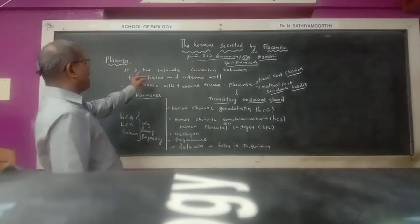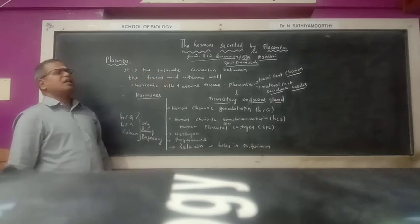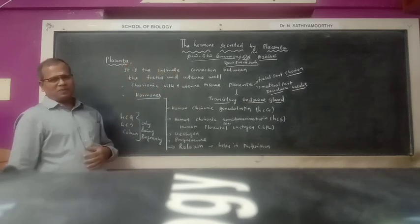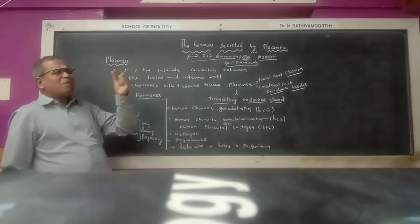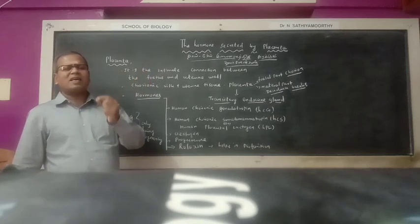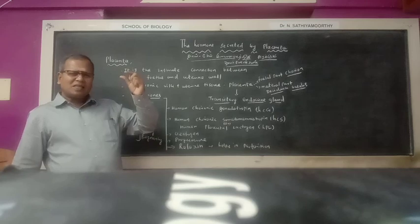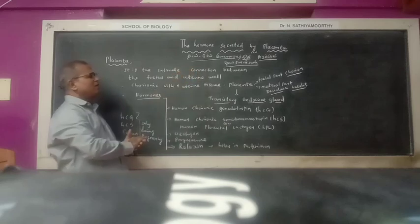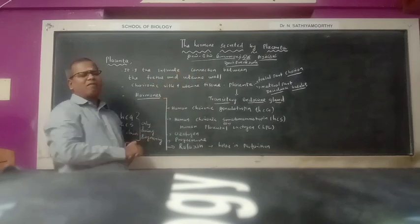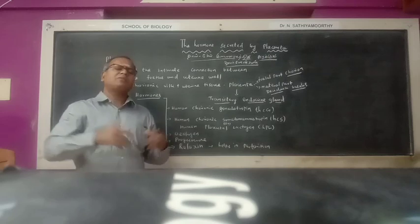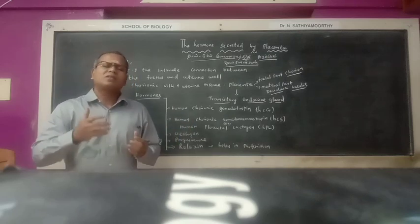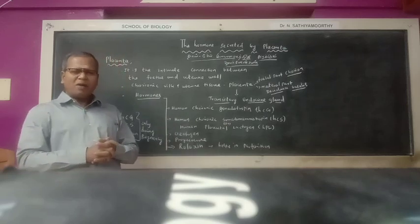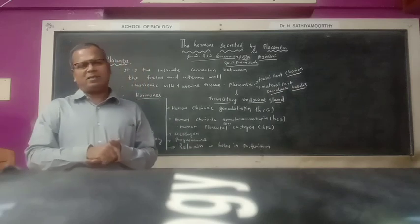Placenta is an intimate connection between the fetus and the uterus. The uterus is made up of three layers: outer cirrus, middle muscular, and innermost membrane. The endometrium is where the fertilized egg is implanted.